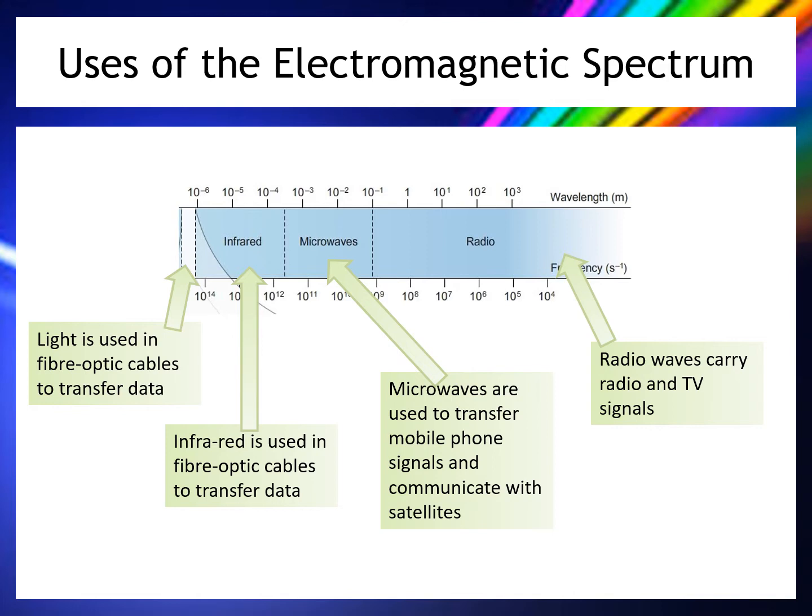If you try to send a radio wave up to a satellite, it just reflects off the atmosphere back to the ground. That's useful for sending radio signals over long distances, but not for reaching a satellite. Microwaves, being a shorter wavelength, can penetrate the ionosphere and reach the satellite — that's what we use for satellite communication. We also use microwaves for mobile phone signals.